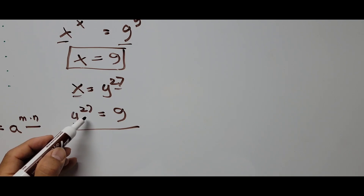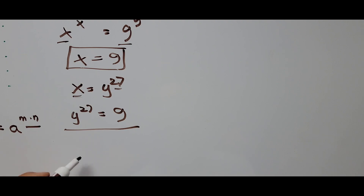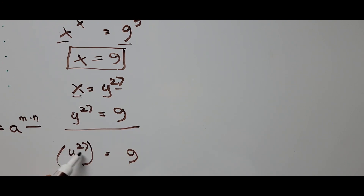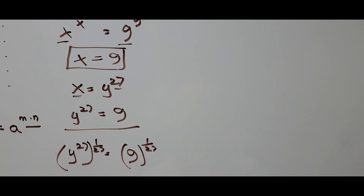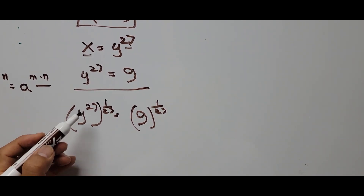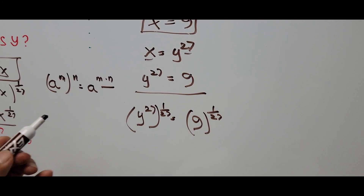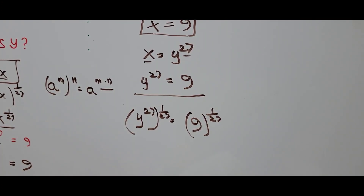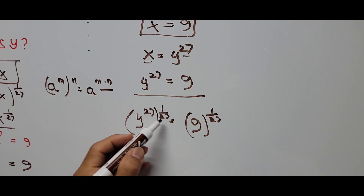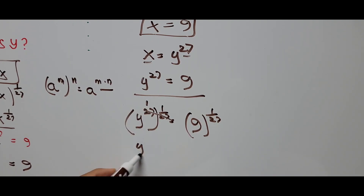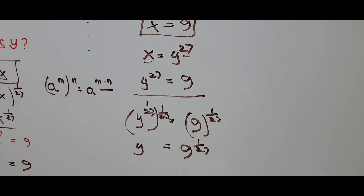To find y, since the exponent is 27, we raise both sides to the reciprocal of the exponent — 1 over 27 — to eliminate the 27. So y raised to 27, raised to 1 over 27, equals 9 raised to 1 over 27. Using the power rule, 27 times 1 over 27 cancels to 1, giving us y to the first power, or simply y equals 9 raised to 1 over 27.